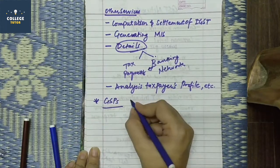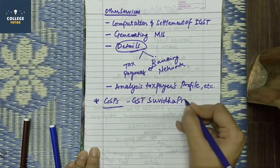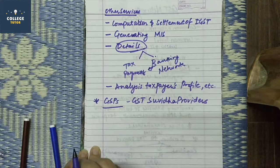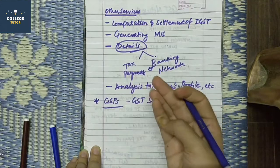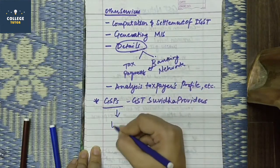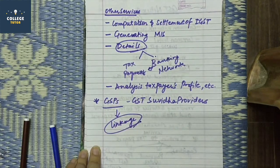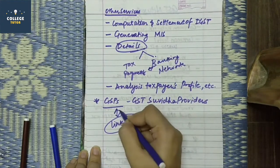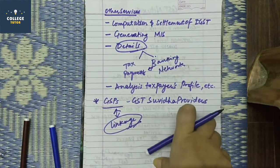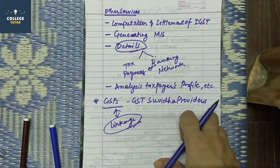Two important terms to understand here: first is GSP — GST Suvidha Providers. GSTN provides linkage between all the stakeholders, whether they be taxpayers, tax professionals, officials, banks, or other stakeholders. GST Suvidha Providers manage this linkage and provide information technology and software development services within the GSTN ecosystem.